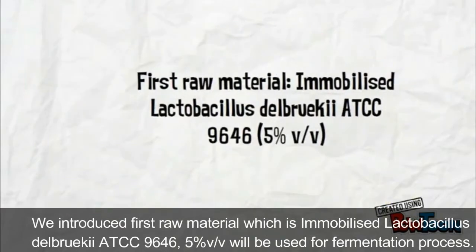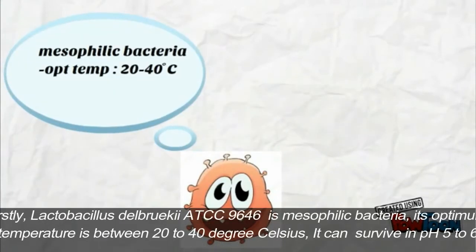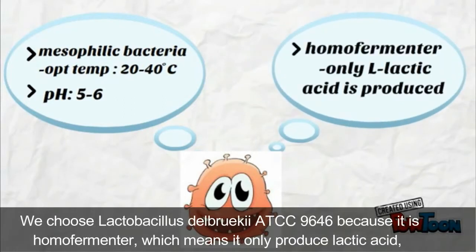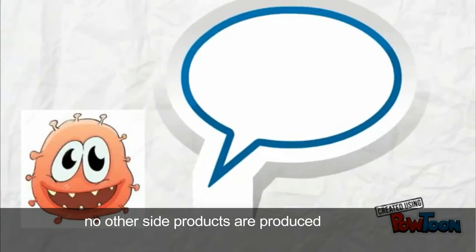We introduce the first raw material which is immobilized Lactobacillus delbrueckii ATCC 9646. Lactobacillus is a mesophilic bacteria. Its optimum temperature is between 20 to 40 degrees Celsius. It can survive in pH 5 to 6. We choose Lactobacillus because it is a homo fermenter, which means it only produces lactic acid. No other side products are produced.